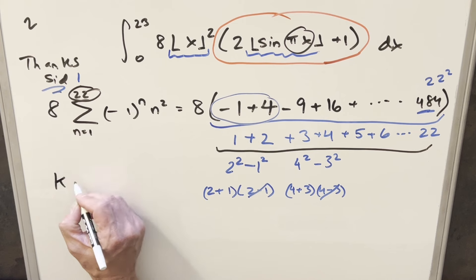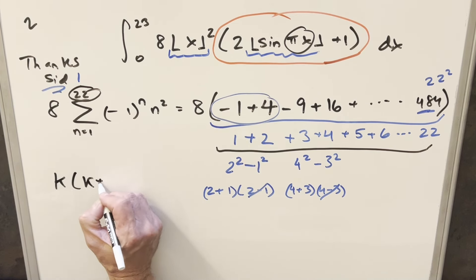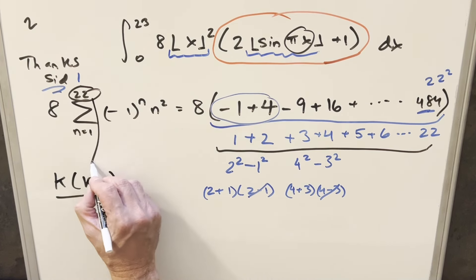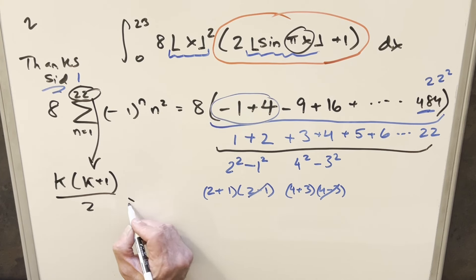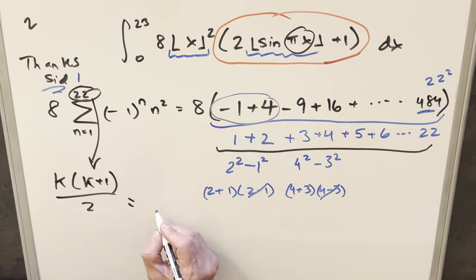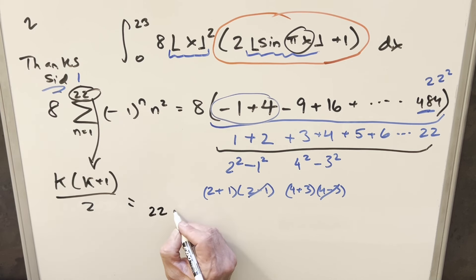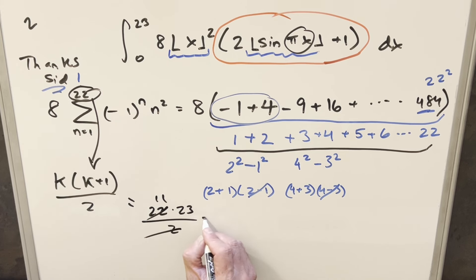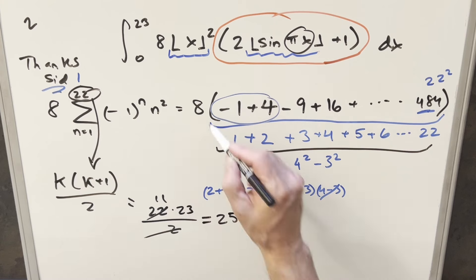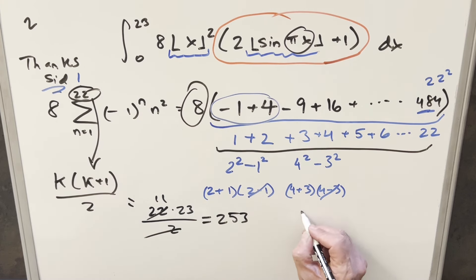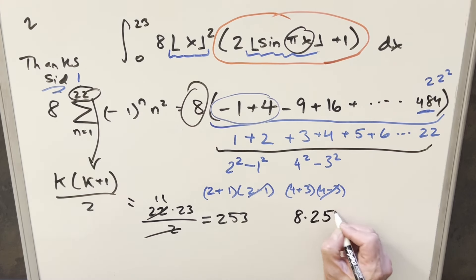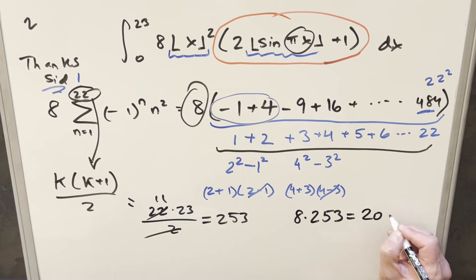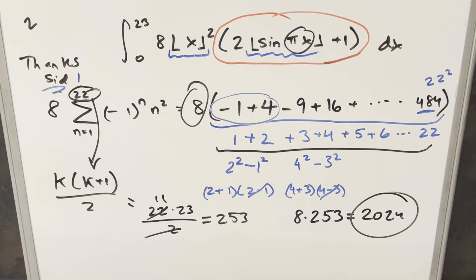Using the formula for the first k natural numbers, k(k+1)/2, with k = 22: we get 22 × 23 / 2 = 11 × 23 = 253. Multiplying by the 8 out front: 8 × 253 = 2024. That's our final answer. Thanks to Sid for another good problem, and thanks everyone for watching!